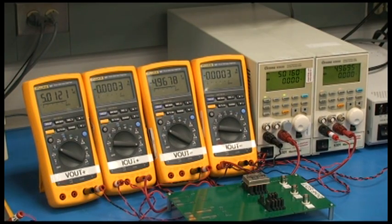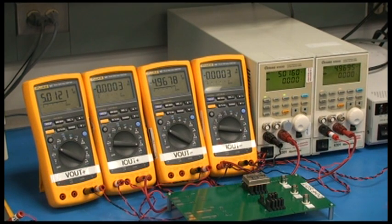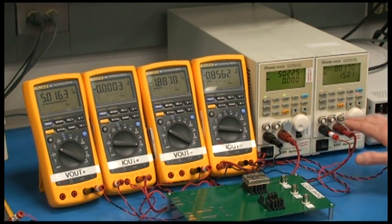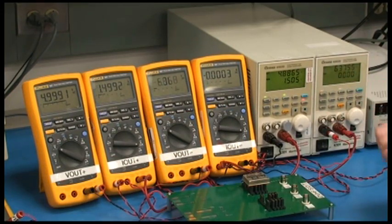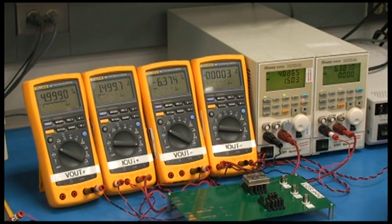In general, the positive output is always tightly regulated. The internal feedback loop of the converter regulates the positive output. So no matter what we do with the loads, I can turn one load on, one load off, and you'll notice on this meter here, that this voltage 4.999 is always tightly regulated.